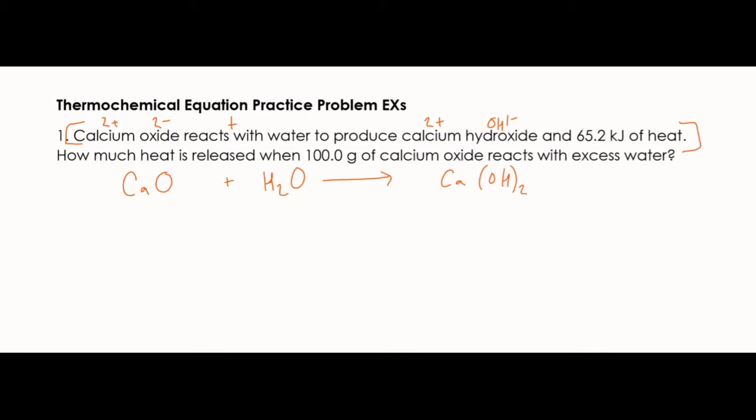At this point, you would also have to balance it. It is actually already balanced. So there's 1 Ca, 1 Ca, 2 oxygens on the left, 2 on the right. So that's balanced. And we've got to add that heat at the end. This is a product, so that's a negative heat.